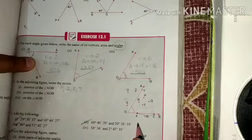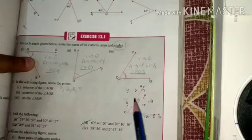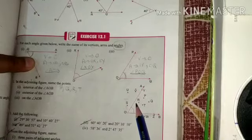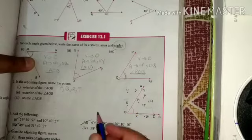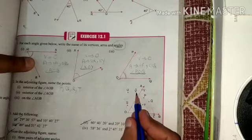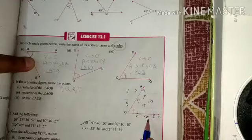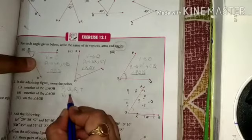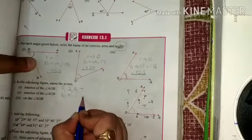Next is exterior of angle AOB. Those are lying at the exterior of angle AOB. These points are U, V, S, and W.